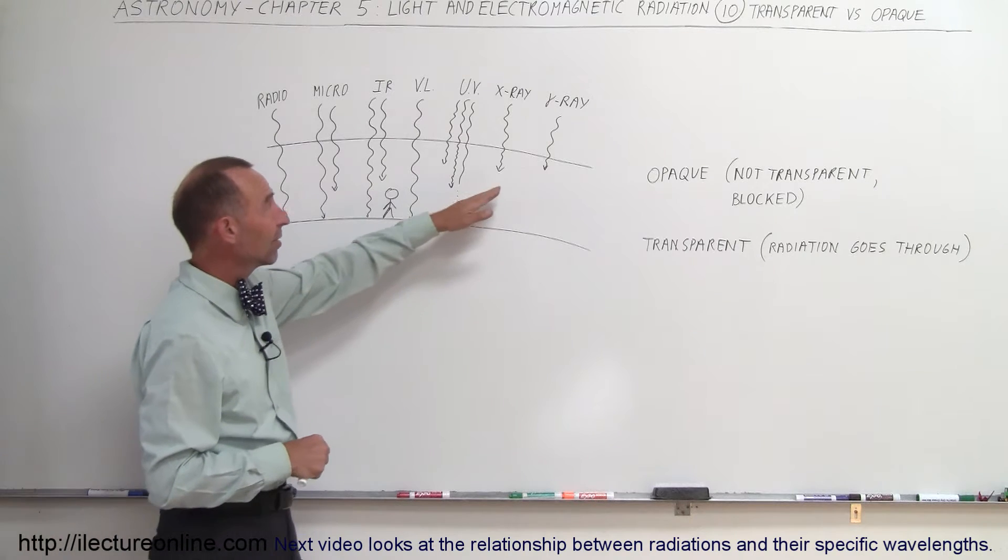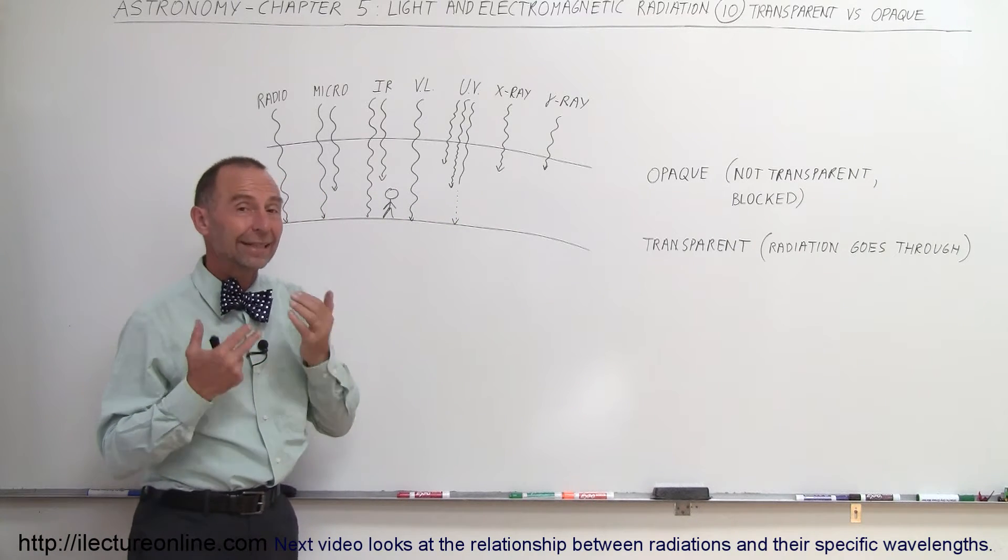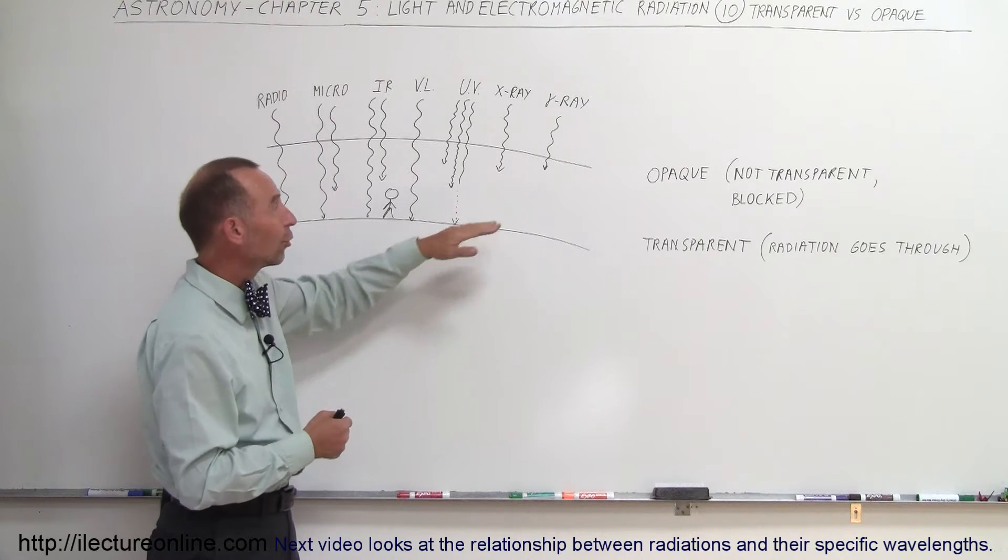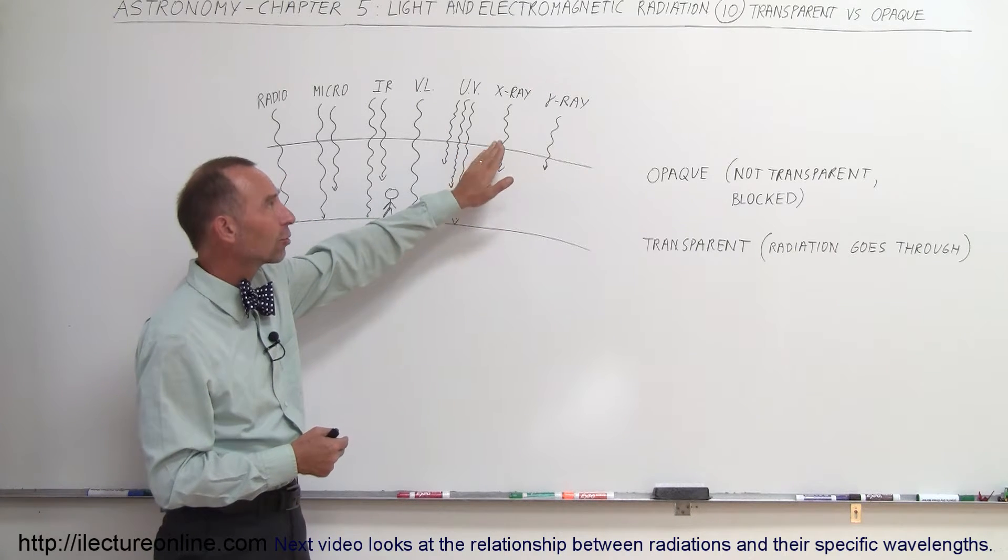So starting with x-rays and gamma rays, we already know that does not make it through atmospheres, so the atmosphere is opaque for x-rays and gamma rays.